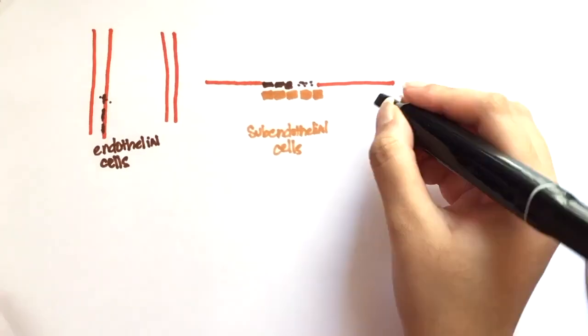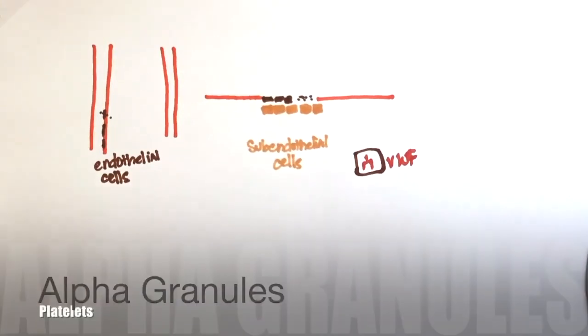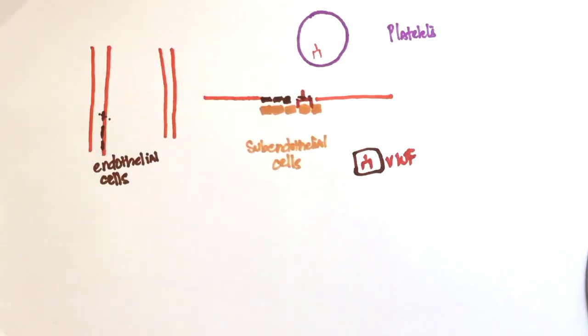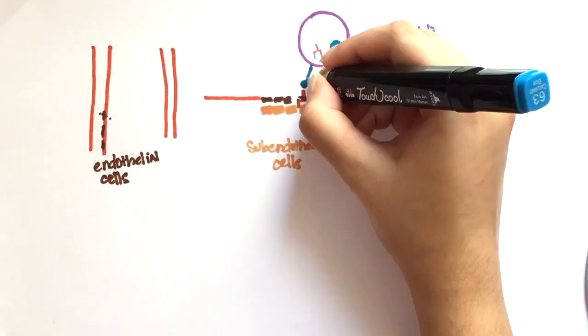Von Willebrand factor is released from the Weibel-Palade bodies on the endothelial cells and the alpha granules of platelets. It binds to the exposed subendothelial collagen. Platelets bind to von Willebrand factor via GP1B, which is expressed on their surface.